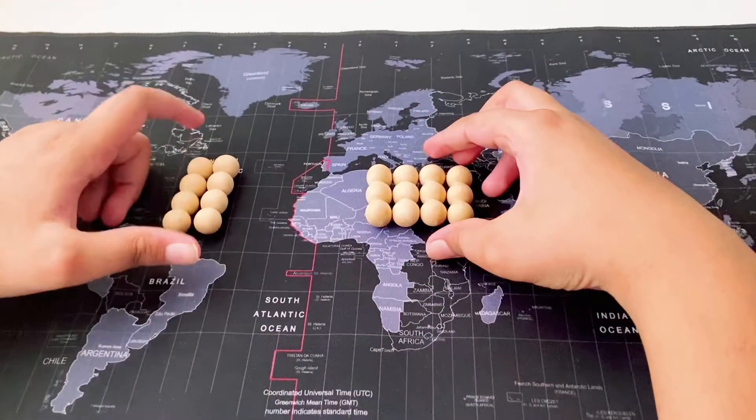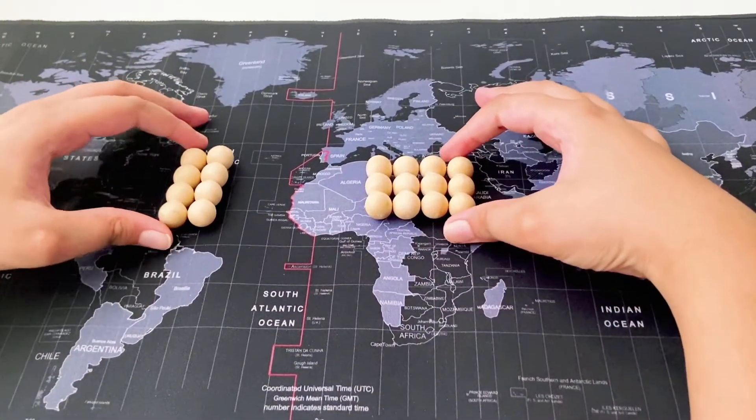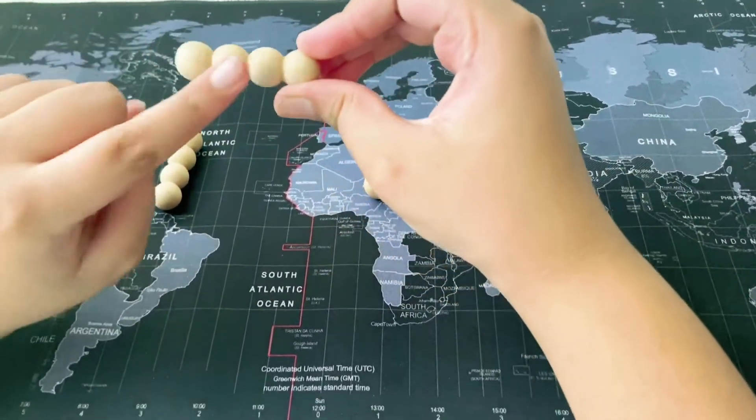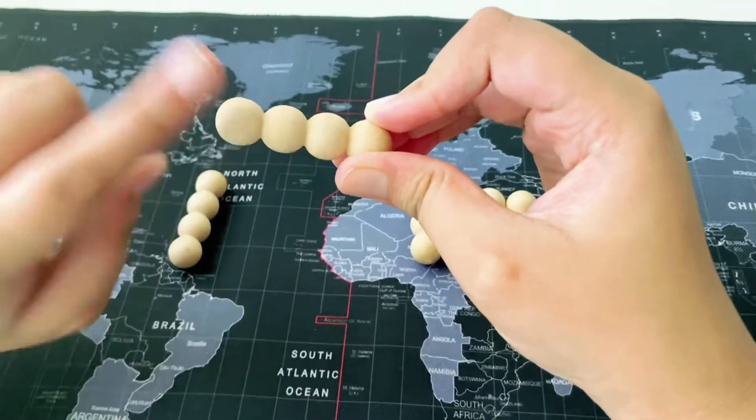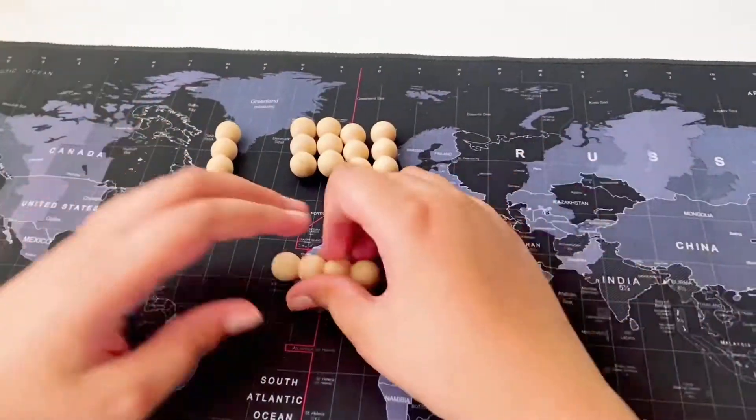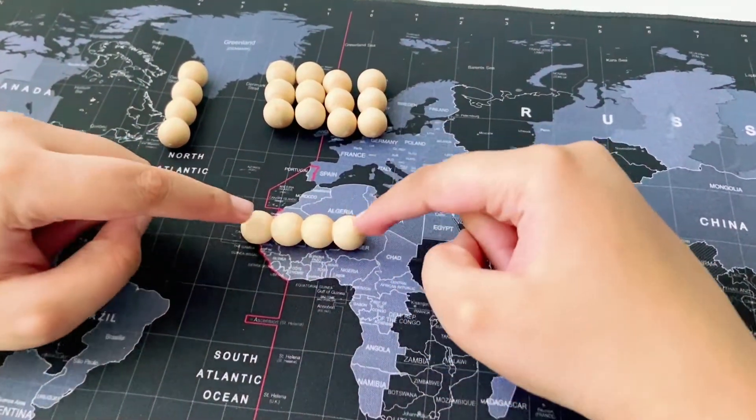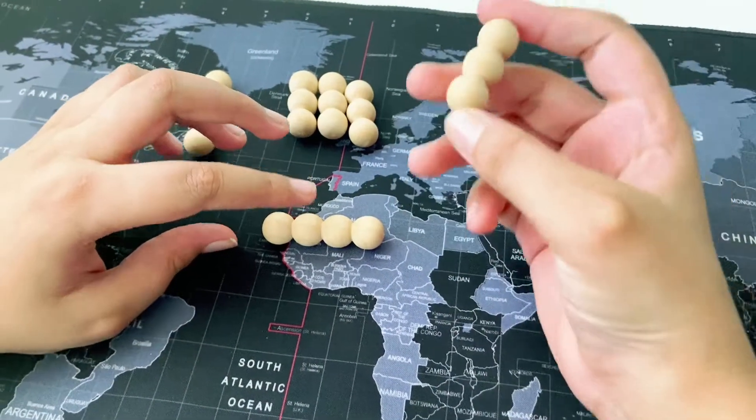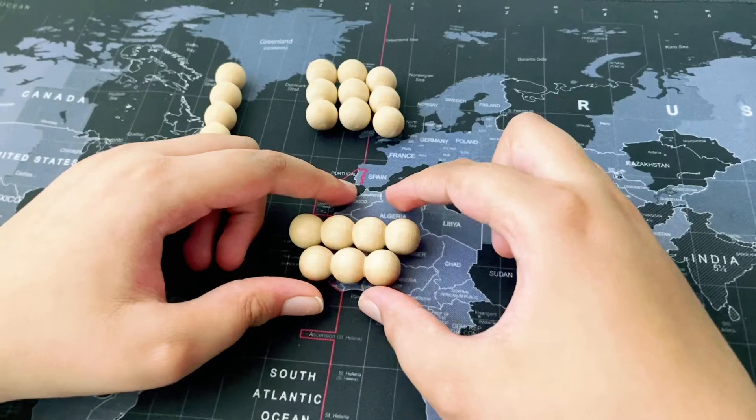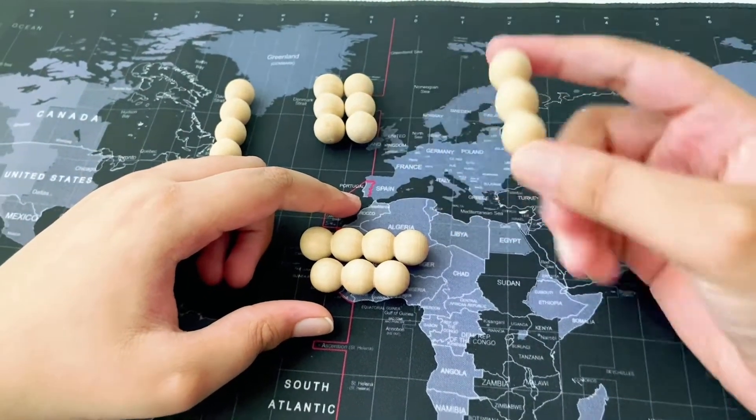Now first we want to take this piece which is the four-bead piece. I'm taking all of these aside. So over here, four-bead piece, now the three-bead piece and we'll keep it over here like that. Another three-bead piece.